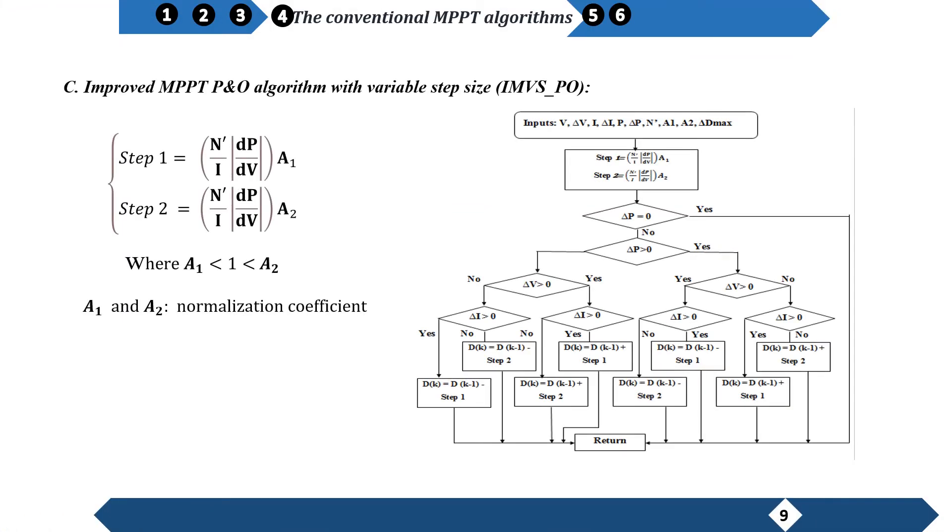VSP&O with a variable step size. As VSP&O, this algorithm uses two different step size variables. This method means using the current variation to determine which of two steps, step one or step two, is used to track the MPP.